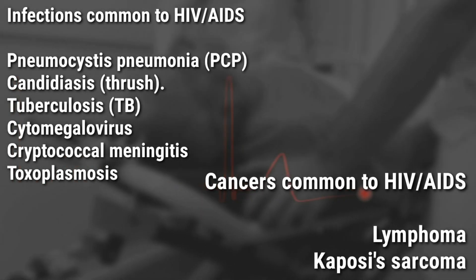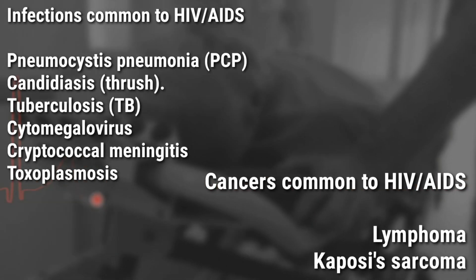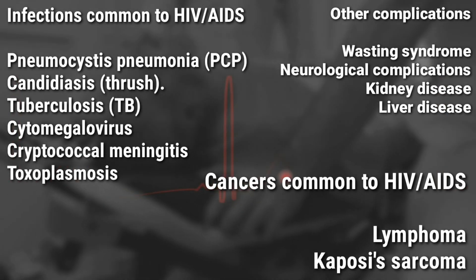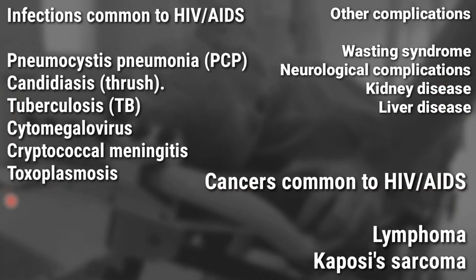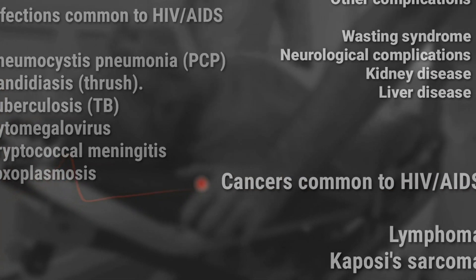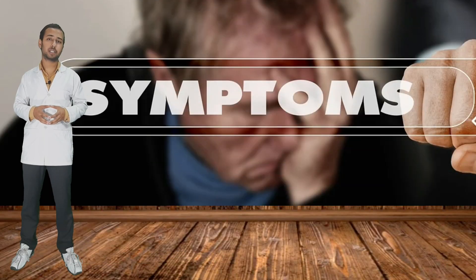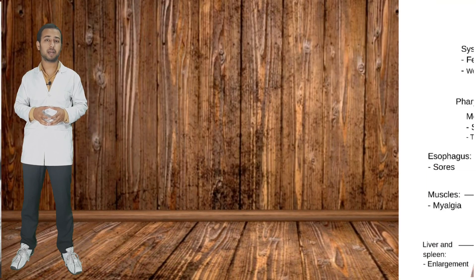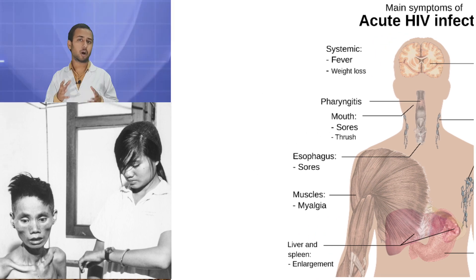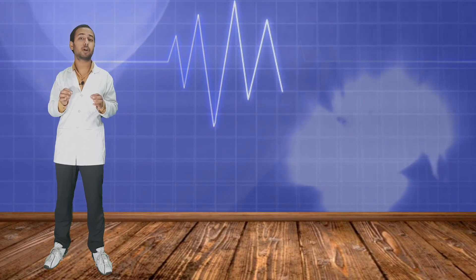Cancers that are common to AIDS include Lymphoma and Kaposi's sarcoma. Other complications include Wasting syndrome, neurological complications, kidney diseases, and liver diseases — which present a wide range of symptoms. Most of these are opportunistic infections or opportunistic cancers, which normally do not occur in a healthy person.